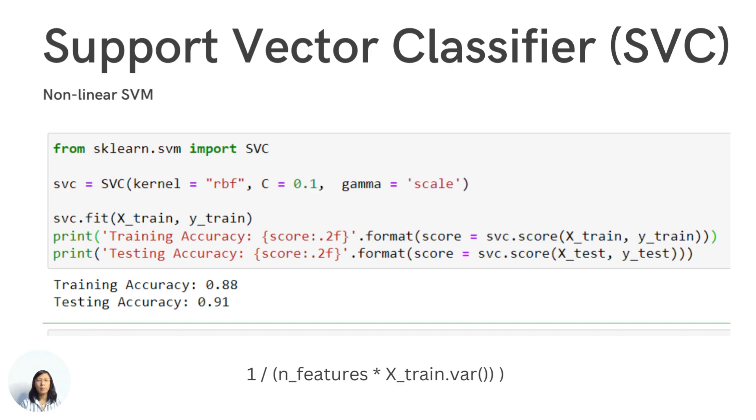So by setting C equal to 0.1 and gamma to be scale, this is the result we got. Our training accuracy has reduced to 88%. However, testing accuracy has increased to 91%. So obviously we can see that our model is not as good as the previous one for the training data, but it is more generalized. It's generalized enough that when we test on the new dataset, the performance has improved. We got 91%. So we have more confidence that our model will be able to classify correctly for the new unseen data.